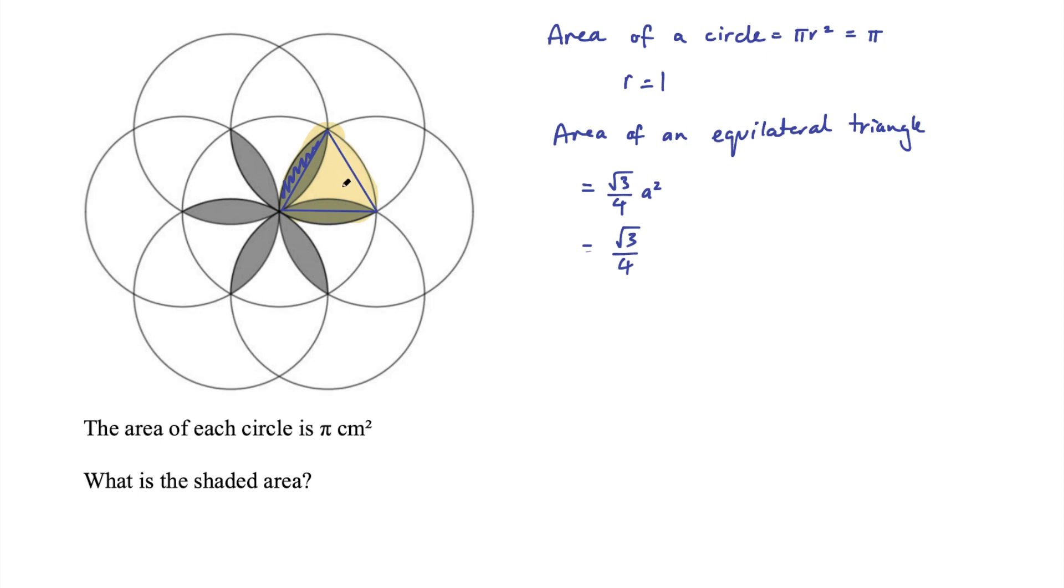Then we want the area of that sector. It has an angle of 60 degrees, so I'm just looking at this one. There's nothing special about this arrangement—you could do it in any other part of this circle. I've just picked this one at random.